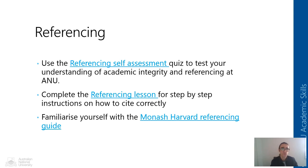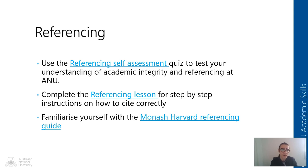Referencing is one way that we can uphold the principles of academic integrity. There are some resources to help you develop your referencing skills, including a referencing and academic integrity self-assessment, a referencing lesson with step-by-step instructions on how to cite correctly, and the Monash Harvard Referencing Guide, which is a really valuable resource. We recommend that you look at these resources to help equip you with the skills you need for your first assignment.